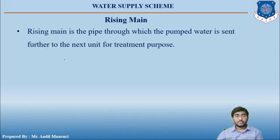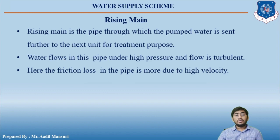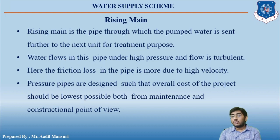The rising main is the pipe through which the pumped water is sent to the next treatment unit. Water flows in this pipe under high pressure and the flow is turbulent. The frictional loss in the pipe is more due to high velocity. Pressure pipes are designed so that the overall cost of the project is the lowest possible, both from a maintenance and construction point of view.